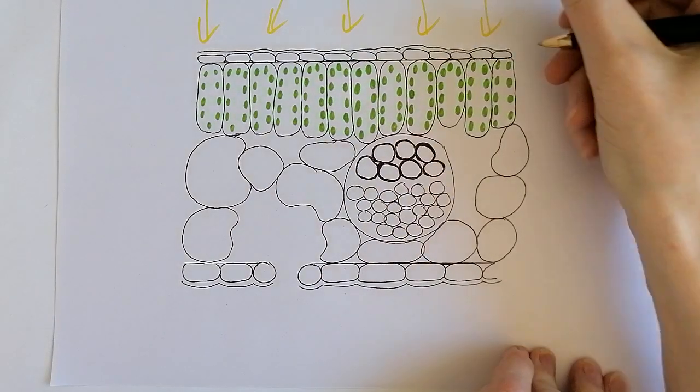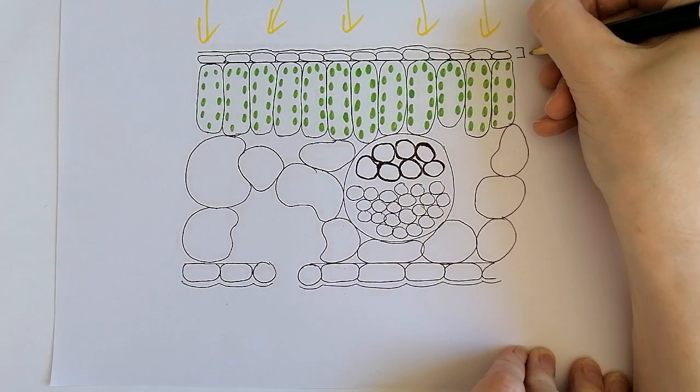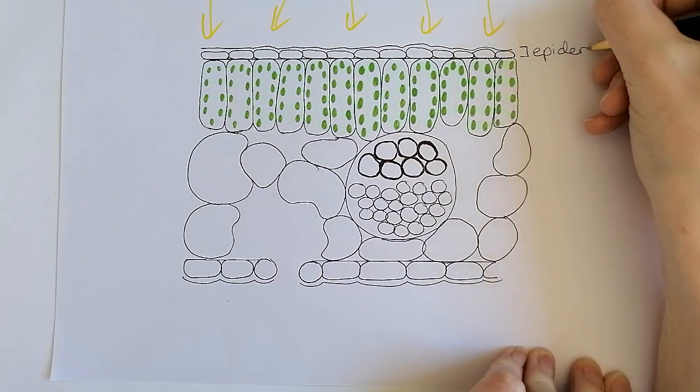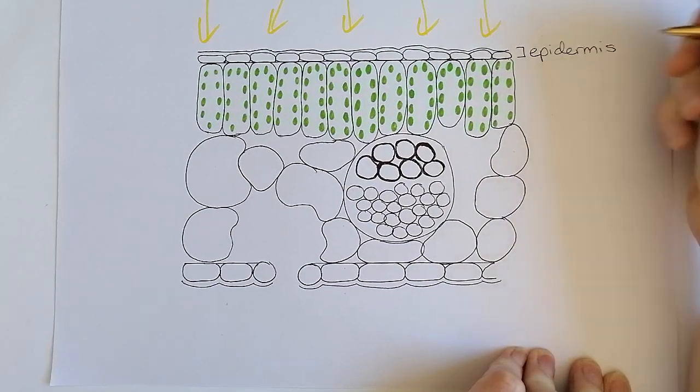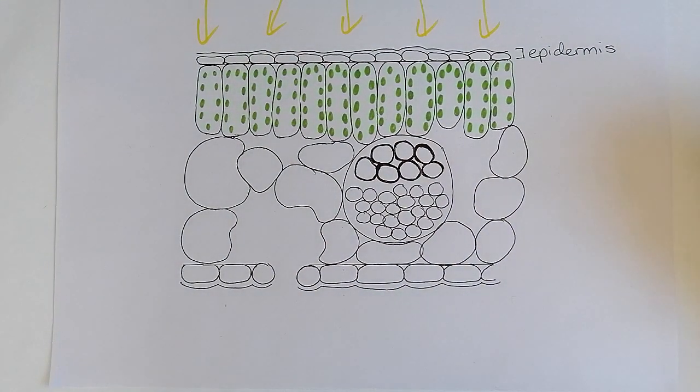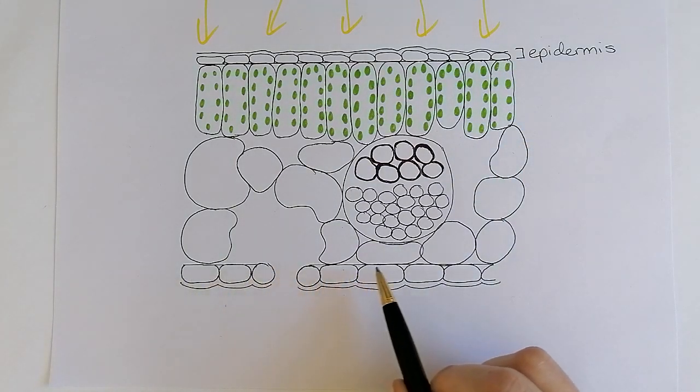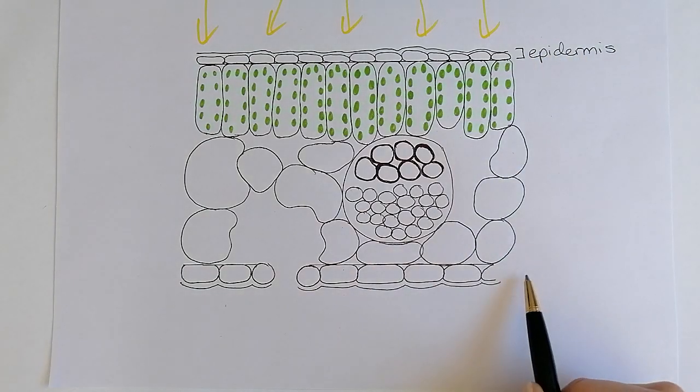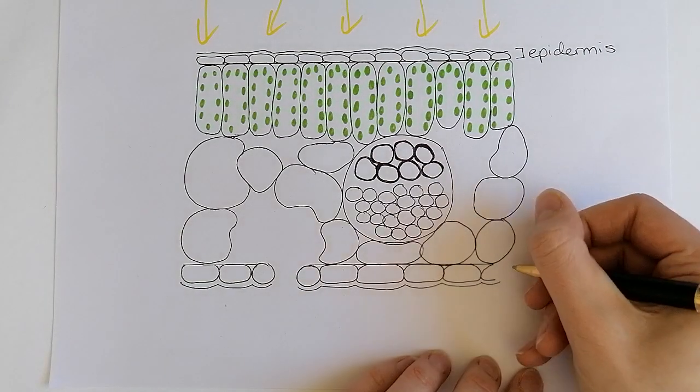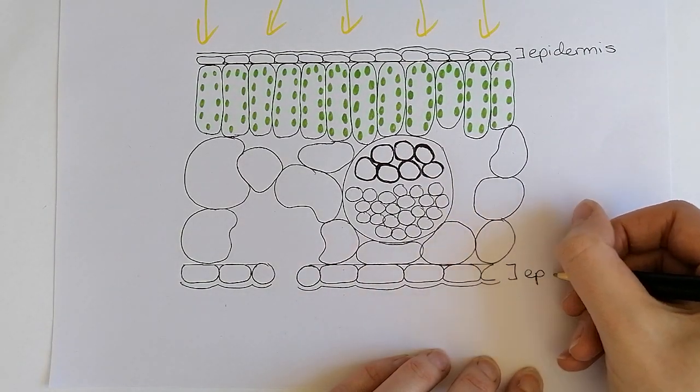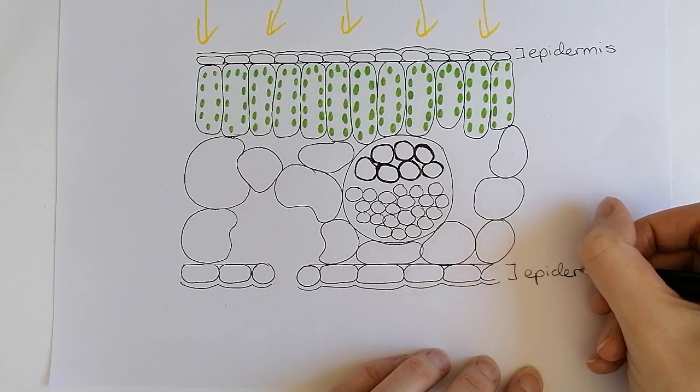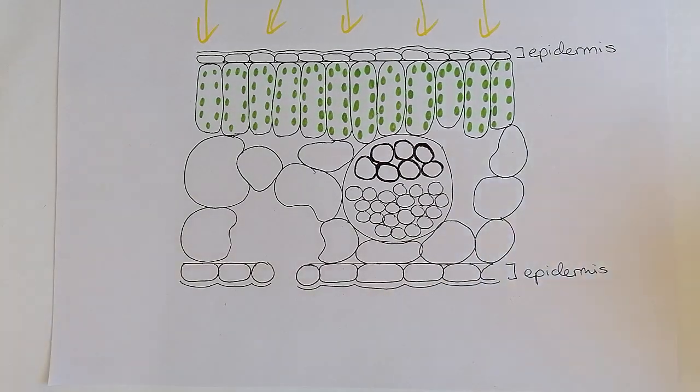Right at the top here we have something called the epidermis, or epidermal tissue. There's actually one at the bottom as well, and they are very interestingly and very uniquely called upper and lower. So you've got two epidermal layers: the upper epidermis and the lower epidermis, and depending on the type of plant, they will have their differences.